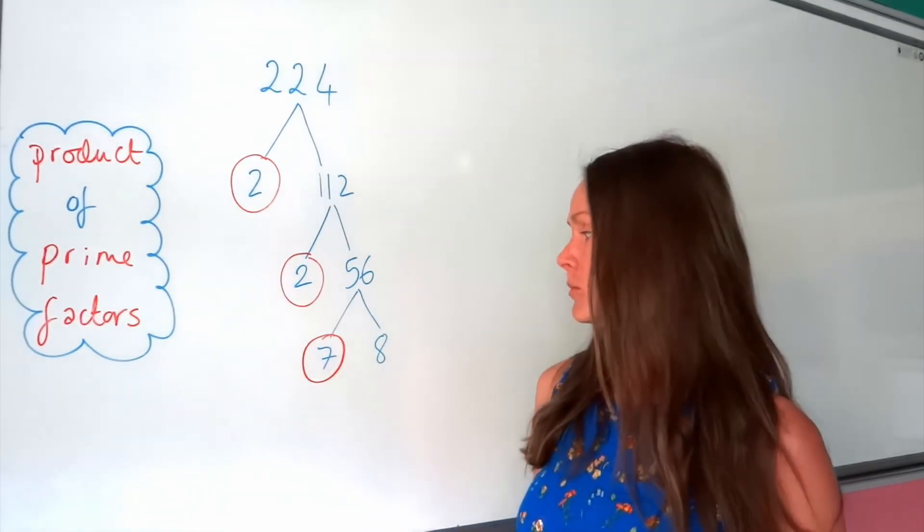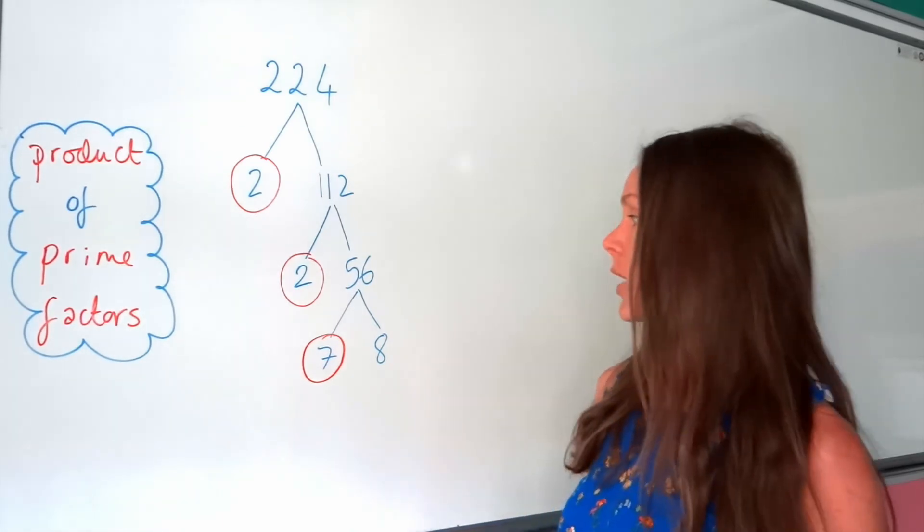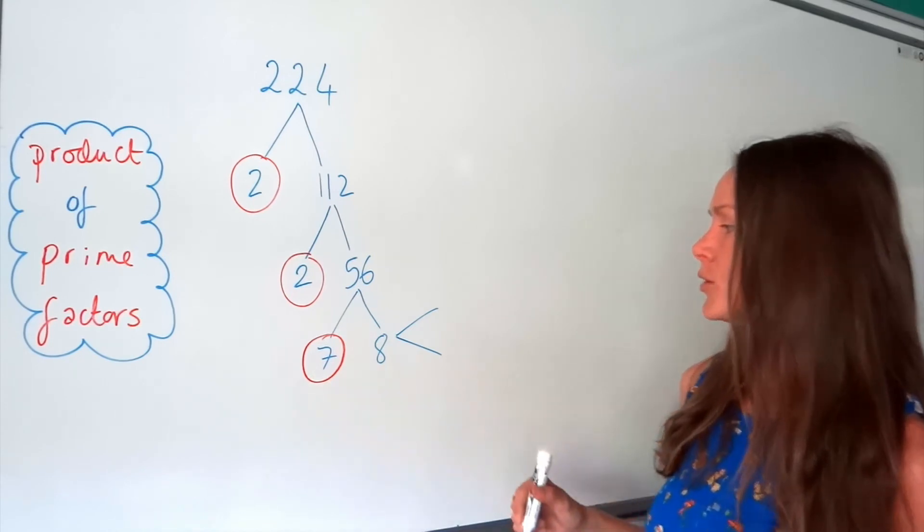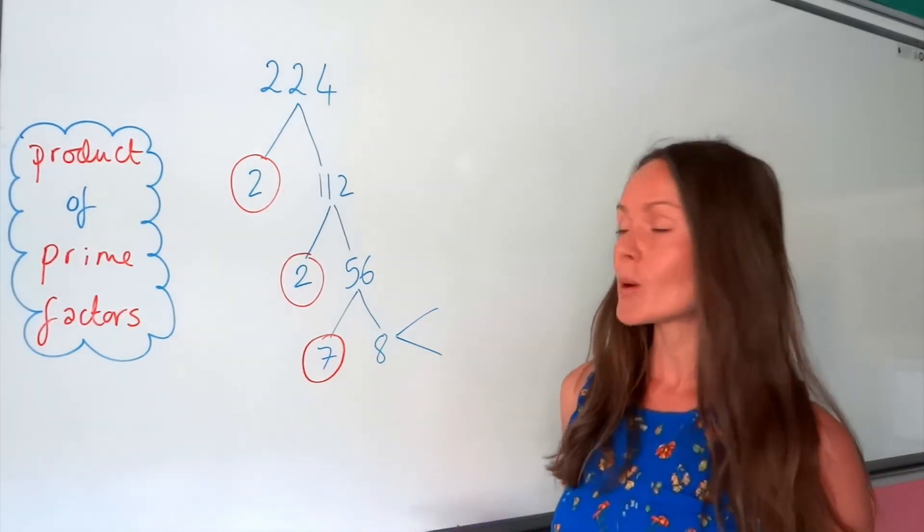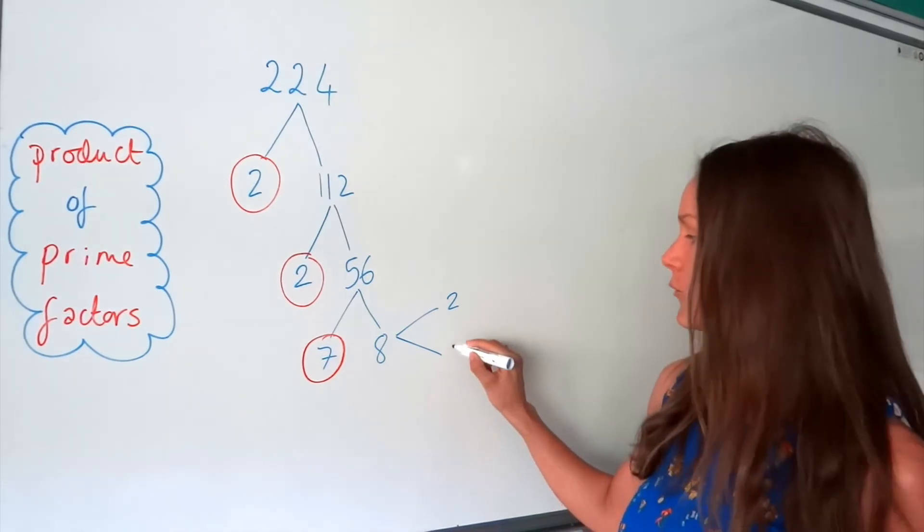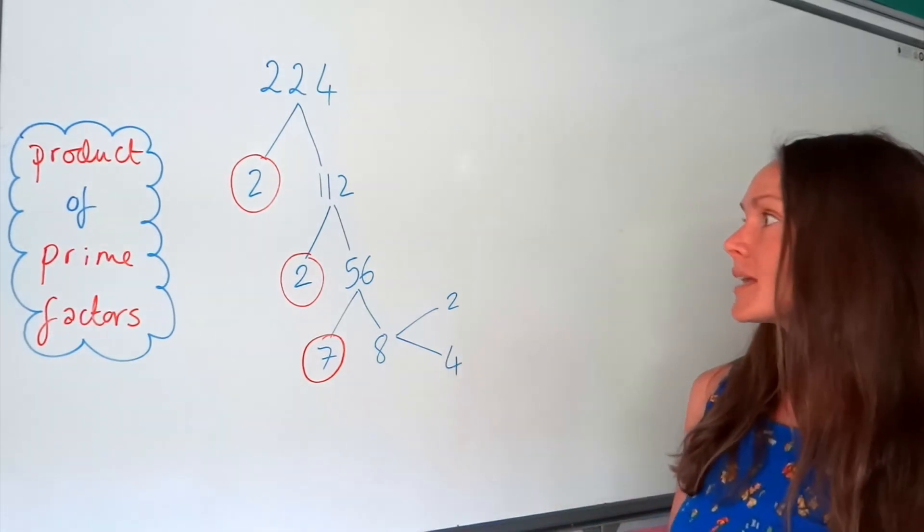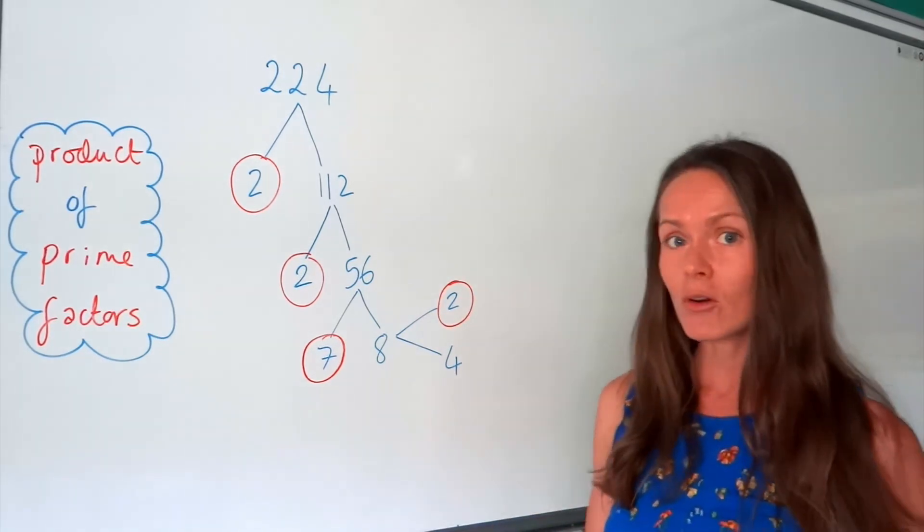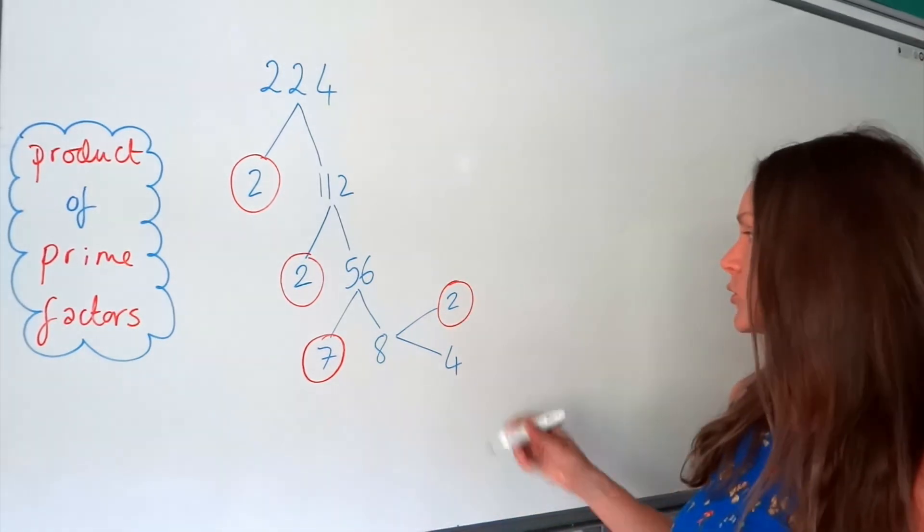8 is divisible by 2. So I know that one's not prime. So I'm going to continue my factor tree. I'm going to keep going this way in case I run out of room. So two numbers that multiply to give 8. Well, I know it's divisible by 2. And 2 multiplied by 4 gives me 8. So again, we've got the number 2.